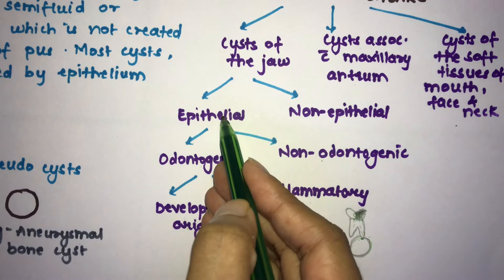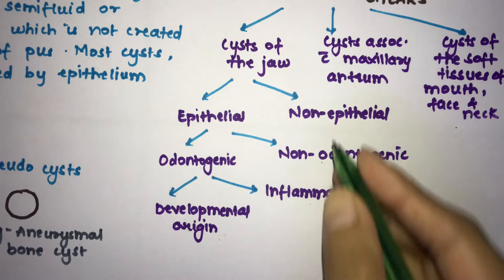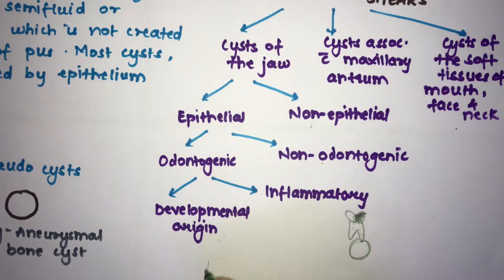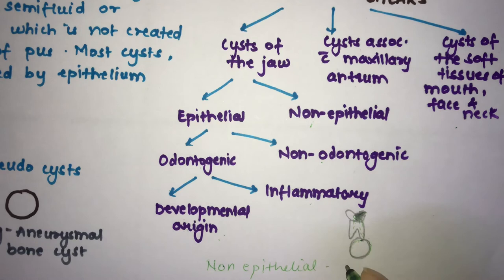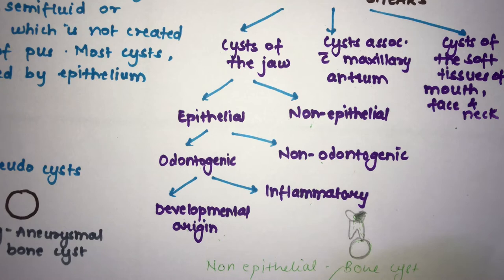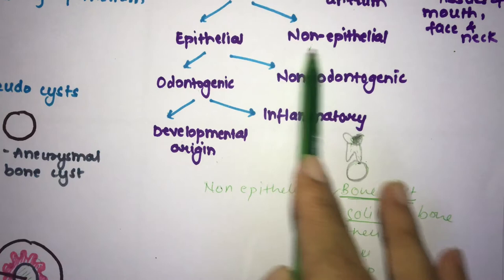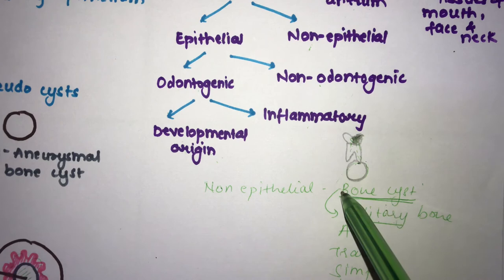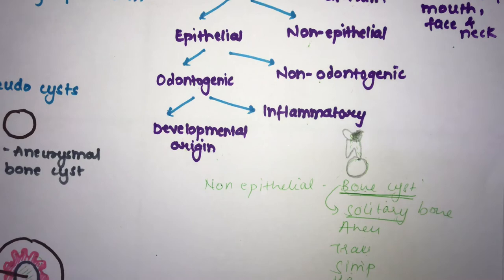For the non-epithelial pseudocysts, a key memory tip is that they all contain the word 'bone cyst' in their name: solitary bone cyst, aneurysmal bone cyst, traumatic bone cyst, simple bone cyst, or hemorrhagic bone cyst. These five are your non-epithelial pseudocysts, meaning they lack an epithelial lining when viewed under the microscope.